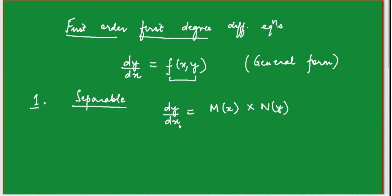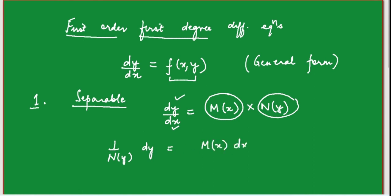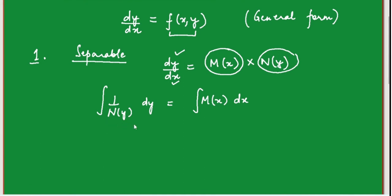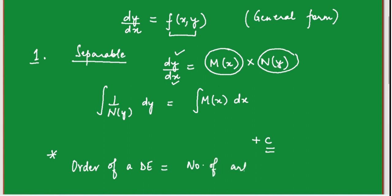The rule for finding the solution of separable differential equations is elementary. You take the terms involving y with dy and the terms involving x with dx, writing it as (1/N(y))dy = M(x)dx. Then integrate both sides — integrate the function of y with respect to y, and the function of x with respect to x. The answer is the integral of one side equals the integral of the other plus a constant of integration, since it's first order and must involve one arbitrary constant.